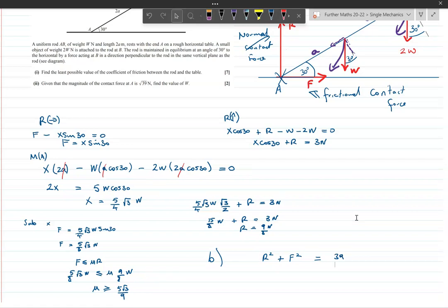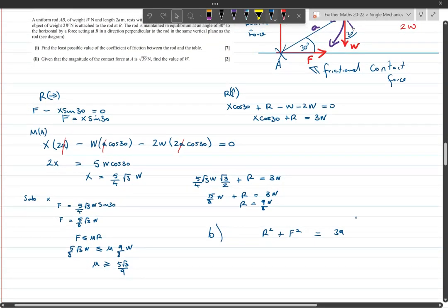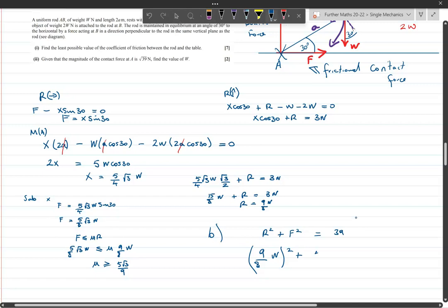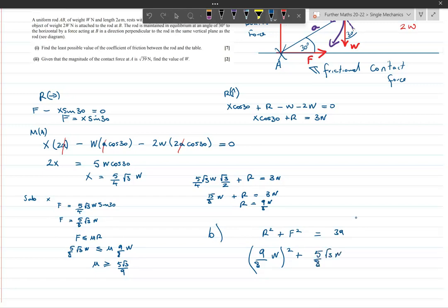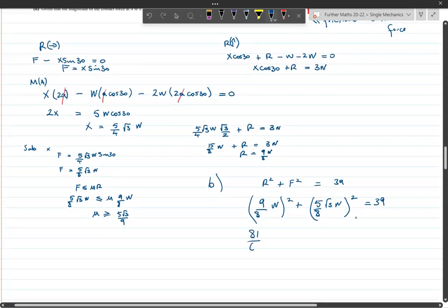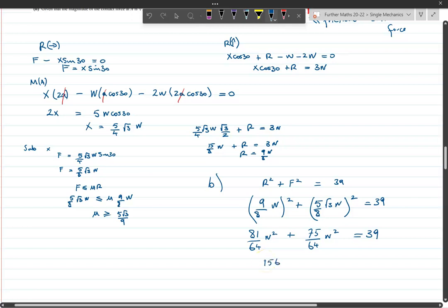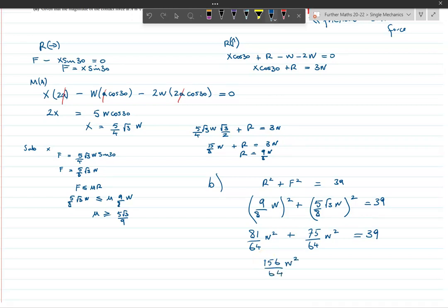We've got expressions for R and F, so that's why there's only two marks for it. We've got R equals 9 over 8W squared plus F is 5 over 8 the square root of 3W squared equals 39. So we have this will be 81 over 64 W squared, and this is 75 over 64 W squared equals 39. That gives us 156 W squared over 64 equals 39.